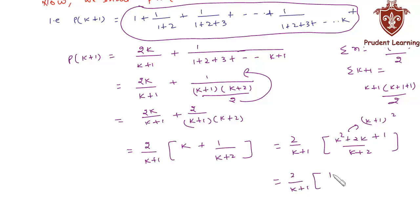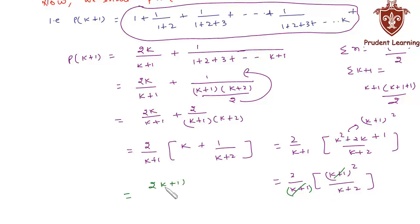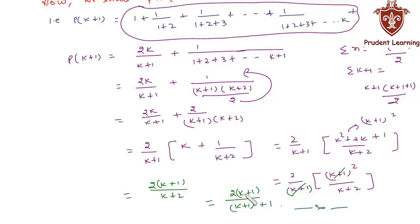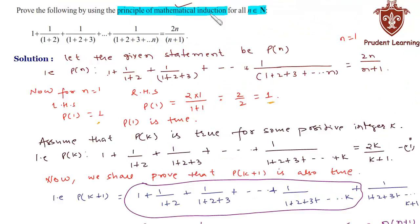So we have 2(k plus 1) squared upon (k plus 1)(k plus 2). Here (k plus 1) cancels from numerator and denominator, leaving us with 2(k plus 1) upon (k plus 2), which is 2(k plus 1) upon (k plus 1 plus 1). Thus P(k plus 1) is true whenever P(k) is true. Hence by the principle of mathematical induction, P(n) is true for all natural numbers n.